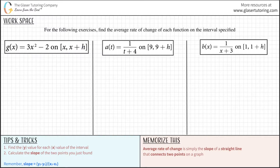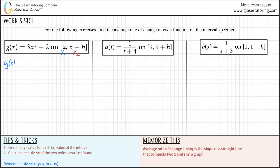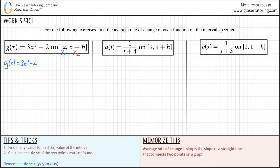These are the x values — let's call this one x1 and this x2. Now let's begin with x1 and plug it in. Now x is just the same as x, so there's really nothing to do here. I could just write g(x) = 3x² - 2. This is my y value. Remember g(x) you can just think of as the y value. So this is the y and my corresponding x value was x.